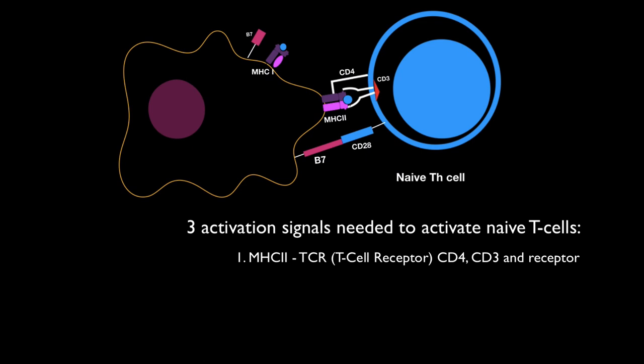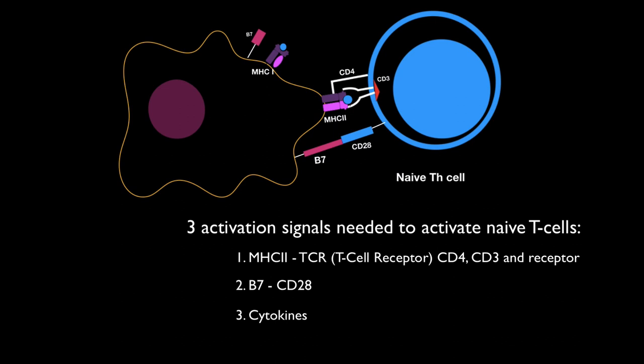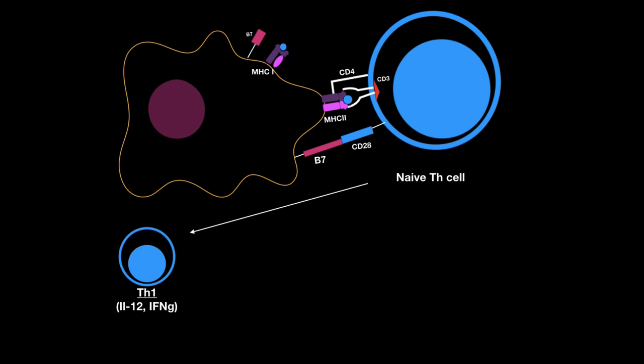Three signals are required to activate and differentiate the cell. The first signal is the T-cell receptor–MHC complex. The second signal is B7 binding to CD28 — that's the second signal. The third signal is going to be cytokines, and the naive T-helper cell is going to differentiate into different T-helper cells depending on what kind of interleukins they receive. For example, if they receive interleukin-12 or interferon-gamma, it becomes T-helper cell 1.